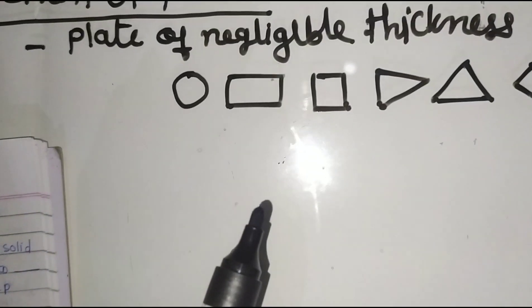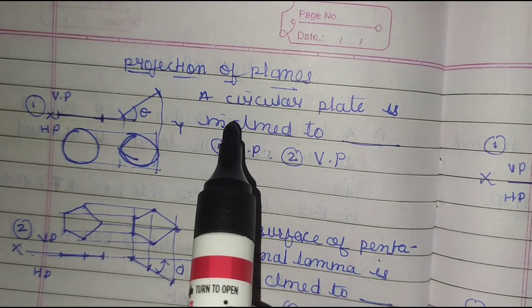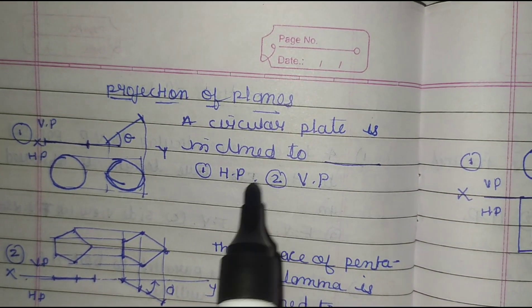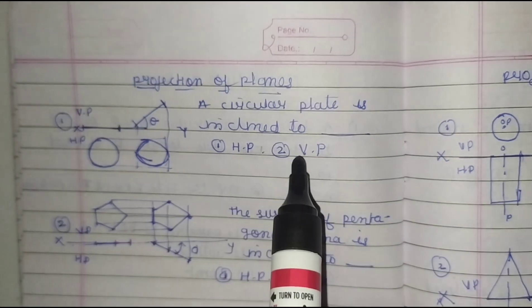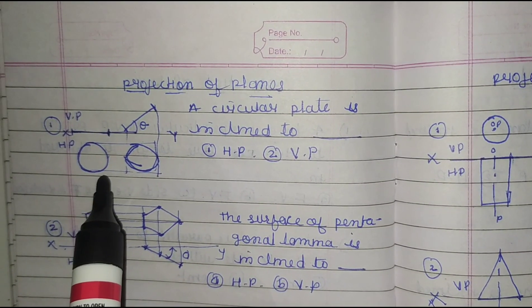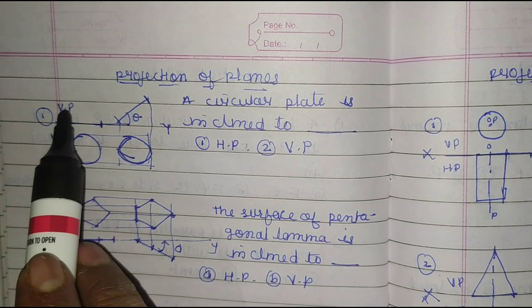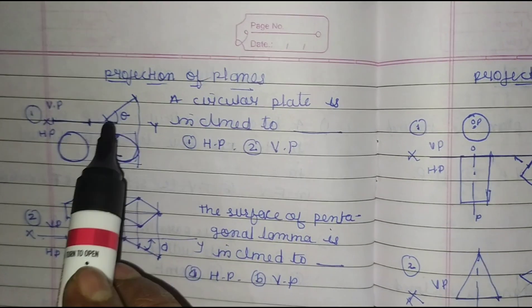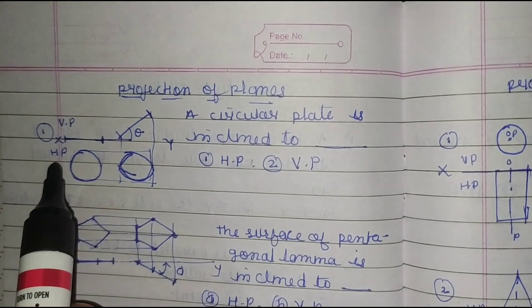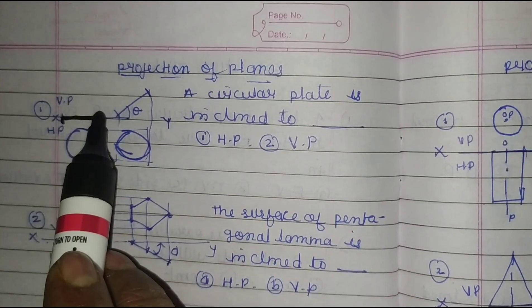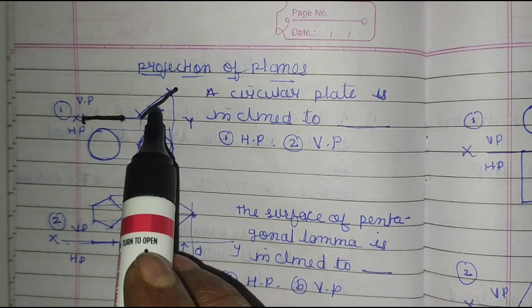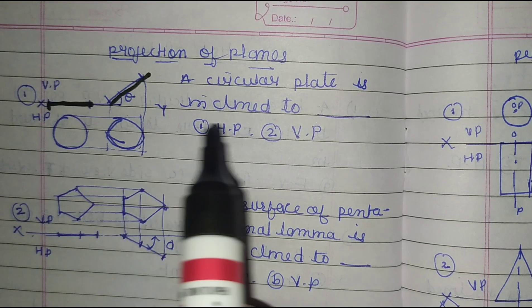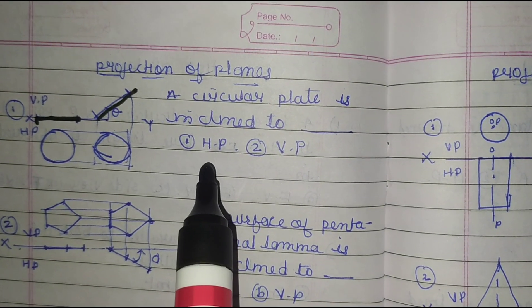Here is the first question on projection of planes. A circular plate is inclined to — observing the figure, this is the VP and this is the HP. The surface of the plate is inclined at angle theta with respect to HP. So the answer is HP.